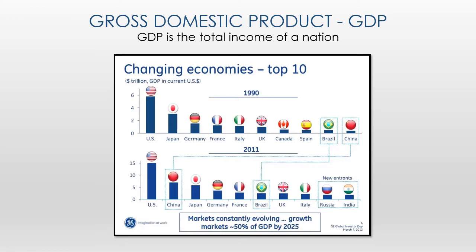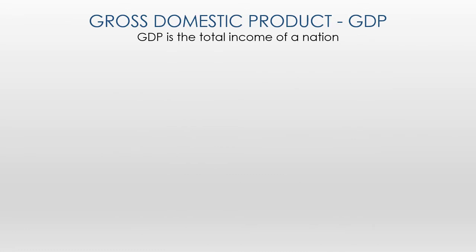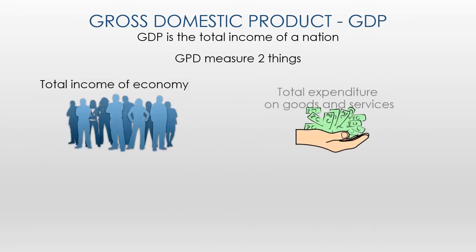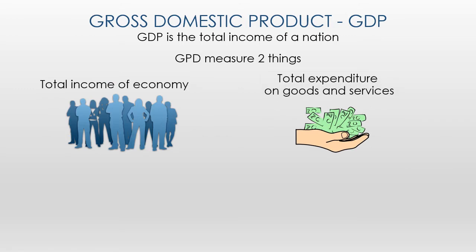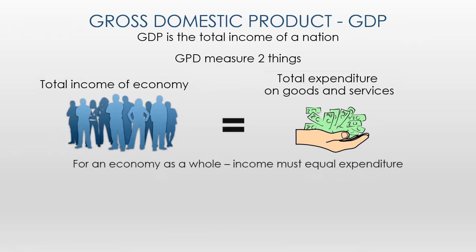Let's take a little more look at GDP. It's going to be a little simplified here at first, because I really want you to understand what GDP is before we start breaking it down. So it basically measures two things: the total income and the total expenditures of goods and services. The total income in an economy is basically all the money being paid to people, and the expenditures are everything we're spending. For an economy as a whole, the income must equal the expenditures — basically, what comes in goes out.